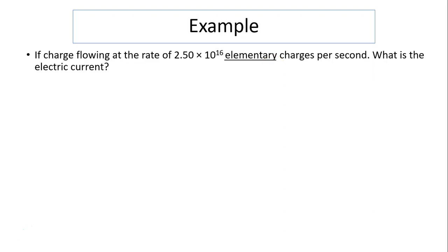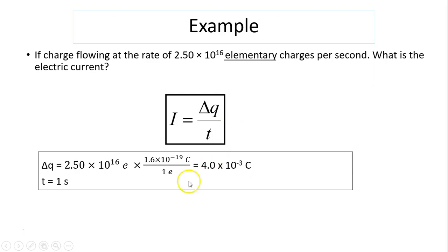So to change elementary charge to coulombs, we know this is how many elementary charges, so you'll have to multiply by one. We know one elementary charge is 1.6 times 10 to the negative 19 coulombs. The elementary charges cancel, so you will have 4 times 10 to the negative 3 coulombs.